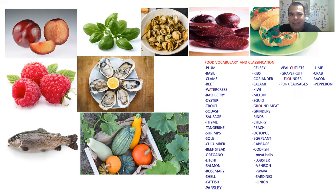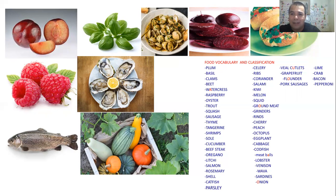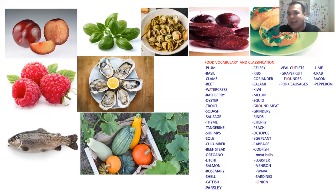Next one is basil. Basil is an herb — this one right here. We use it in cooking for seasoning meals. It also has medicinal properties, so it has two different functions: natural medicine and seasoning. Next, clams — very small shells that we use in paellas or you can eat them alone with a creamy sauce. Really delicious, and we can also find them in paellas.